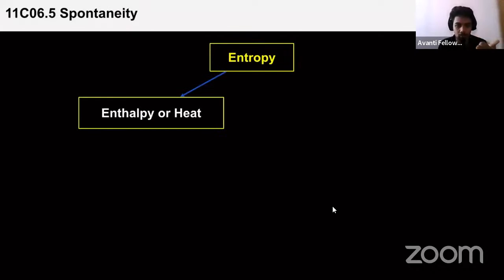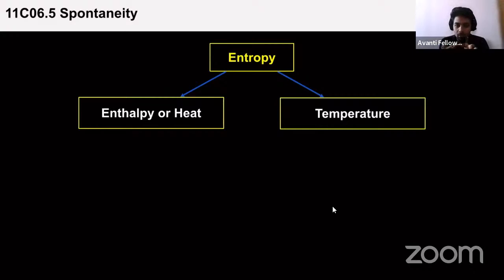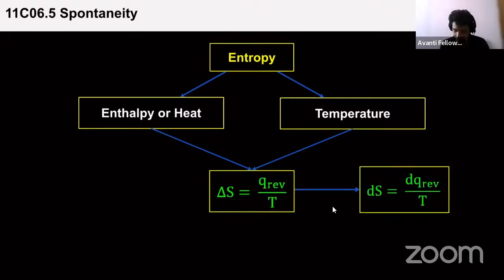Entropy depends on the heat content or energy of the system, and also increases with increasing temperature — because as energy of the molecule increases, vibrations increase and disorderness increases. The equation for entropy change is ΔS = Q_rev / T, where Q_rev is the heat of the system in a reversible process divided by temperature.